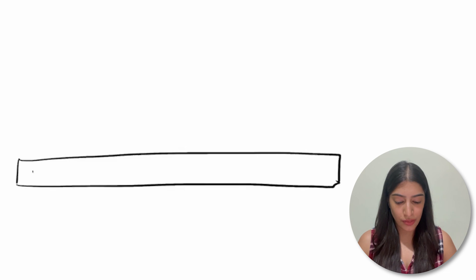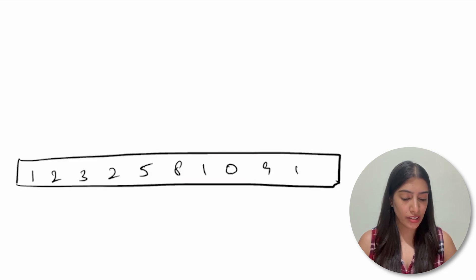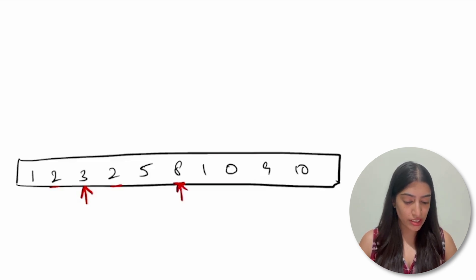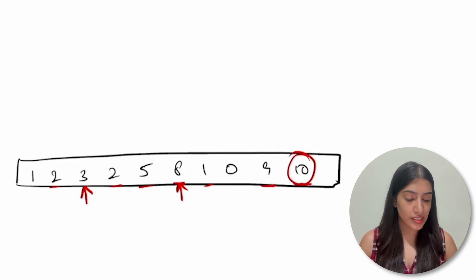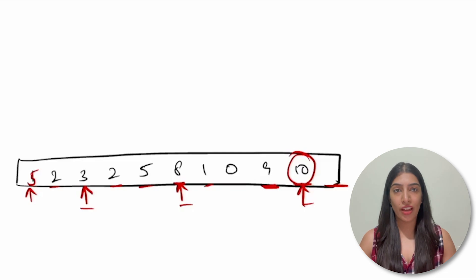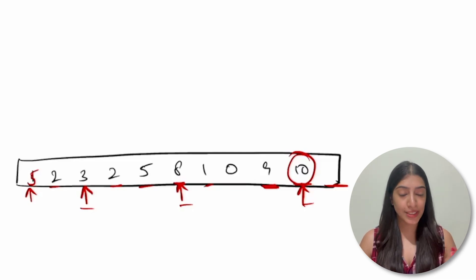Suppose our array elements are 1, 2, 3, 2, 5, 8, 1, 0, 9, 10. What are the peak elements? The number 3 is greater than both adjacent elements, so it's a peak element. The number 8 is greater than both 5 and 1, so it's a peak element. The number 10 is a peak element because it has only one adjacent element which is 9, and no element to its right. So this array has possible answers: 3, 8, and 10.